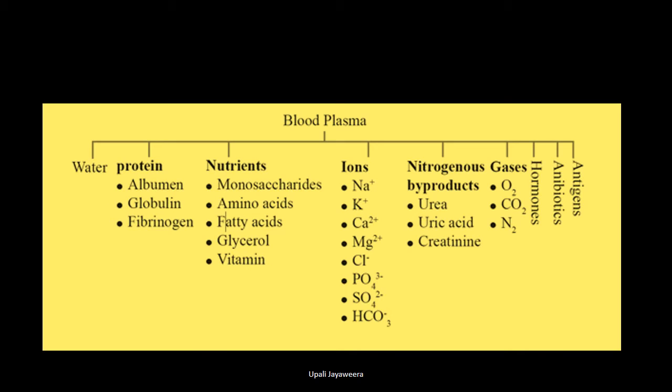Urea, uric acid, and creatinine are nitrogenous byproducts. Oxygen, carbon dioxide, and nitrogen also dissolve in blood. Other than that, hormones, antibiotics, and antigens are present in the blood.